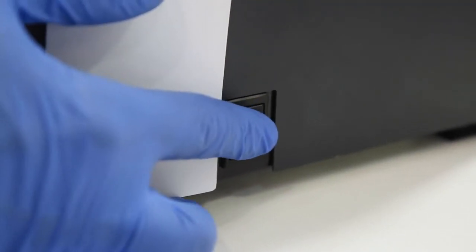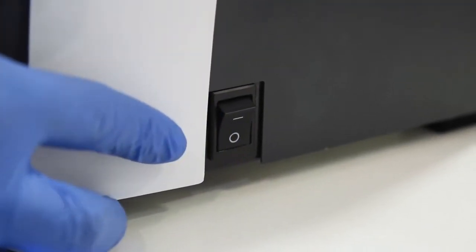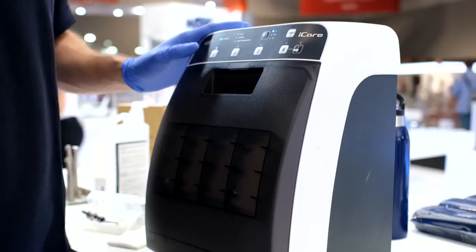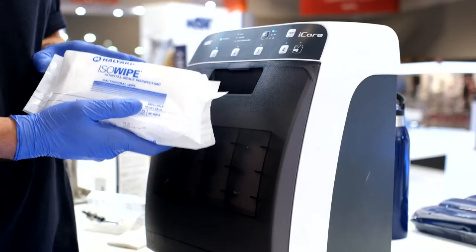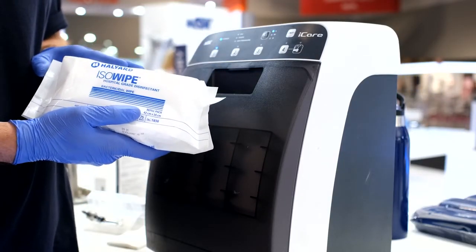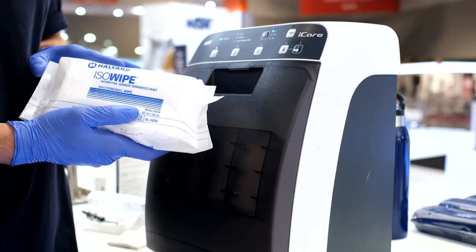Before cleaning the iCare, first turn off the power switch and remove the power cord from the unit. Wipe the unit with a cloth moistened with water, warm water or soapy water, then wipe again using neutral detergent or alcohol wipes.